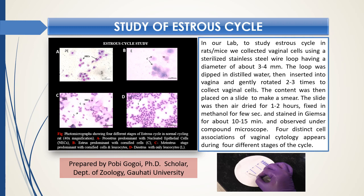Here is a slide from our laboratory, prepared at Gauhati University — the estrus cycle in rat. In proestrus: nucleated epithelial cells. In estrus: cornified epithelial cells. In metestrus: cornified epithelial cells and leukocytes. In diestrus: all are leukocytes. From these types of cells we can identify the phase of the cycle — a beautiful application of this simple procedure to identify the phases of the estrus cycle.